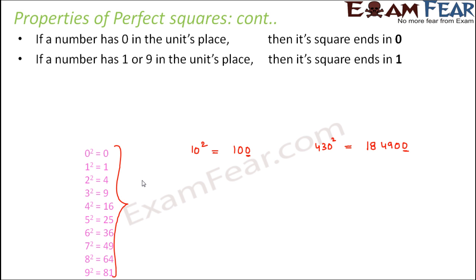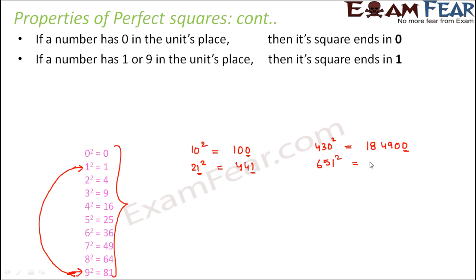If a number has 1 or 9 in the units place, then its square ends in 1. Because 1 squared is 1 and 9 squared is 81 — so 1 and 9 in the units place behave the same way; in both cases the result has 1 in the units place. For example, 21 squared is 441, and since the number had 1 in the units place, the result also has 1. A bigger number like 651 squared gives 423,801 — again 1 at the units place.